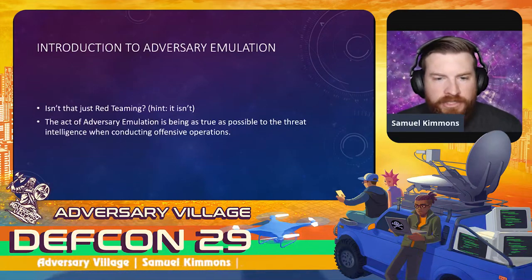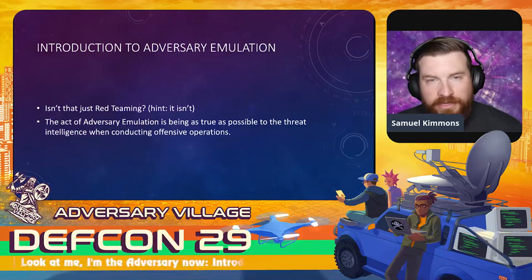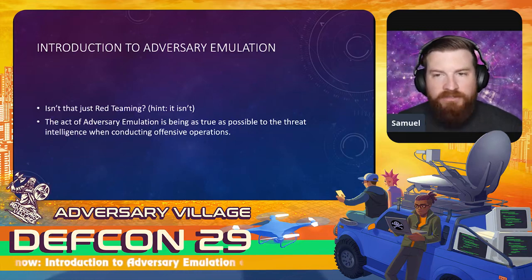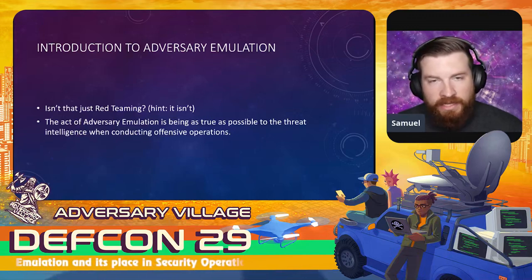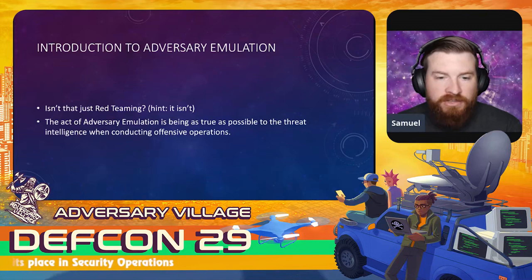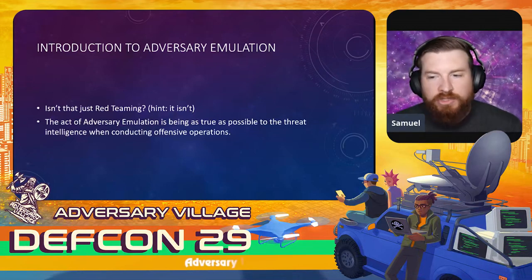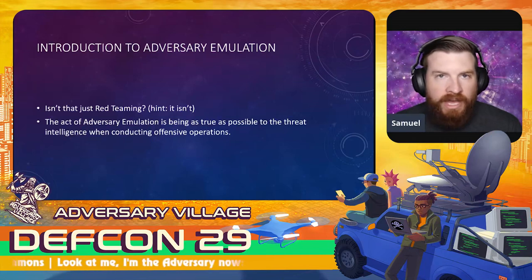Let's jump into Adversary Emulation and what it actually is. You might be thinking, isn't that just red teaming? It isn't. It may be performed by red teams or pen testing teams depending on what your organization has, but Adversary Emulation falls under that broader umbrella of offensive security. To me, the act of Adversary Emulation is being as true as possible to the threat intelligence when conducting offensive operations — because without threat intelligence, you don't really have Adversary Emulation. You'll hear me constantly repeat 'threat intel' because it's very important to this topic.